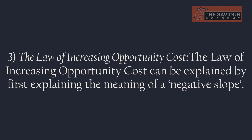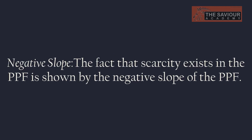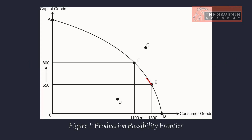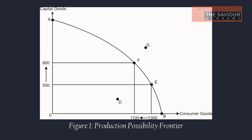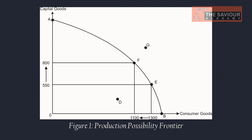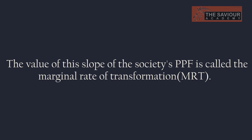The law of increasing opportunity cost can be explained by first explaining the meaning of a negative slope. The fact that scarcity exists is shown by the negative slope of the PPF. Moving from point E to point F, capital production increases by 800 minus 550, that is 250 units — a positive change. But that increase in capital can only be achieved by shifting resources away from consumer goods production. Thus, consumer goods production decreases by 1,300 minus 1,100, that is 200 units — a negative change. The ratio of the change in capital goods to the change in consumer goods is called the marginal rate of transformation (MRT).